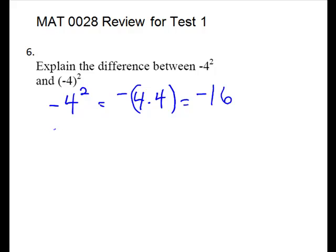The second one with parentheses everything is part of the base. So the whole negative 4 is what you make 2 copies of. And 4 times 4 is 16. This time 2 negatives that is even gives you a positive.